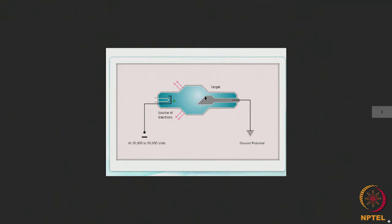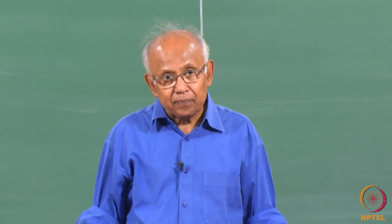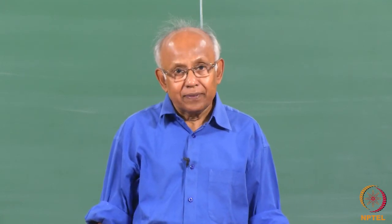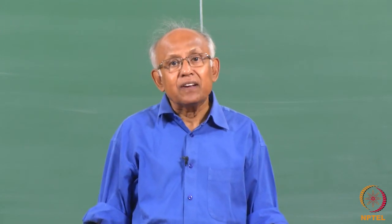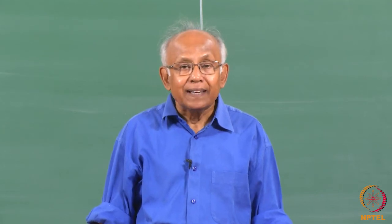Say if we have the element A that makes up the target, then we will have the characteristic radiations of A — notably Kα and Kβ radiations of A — coming out of the X-ray machine. These characteristic radiations, as the name implies, are characteristic of the target material itself. That means for a particular target made up of a particular element, the characteristic radiations produced will have particular wavelength values.